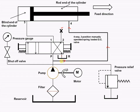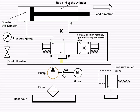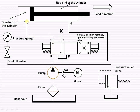Now when the four-way direction control valve is in the left envelope mode, from the reservoir the fluid enters into the filter, from the filter to the pump, from the pump to port P, from P to port 1, and from 1 to port 3-4. It will enter into the blind end of the cylinder and cause the piston and piston rod to move in the forward direction.